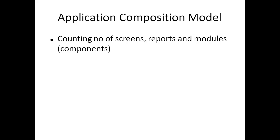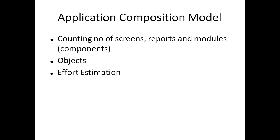The Application Composition Model is based on counting the number of screens, reports, and modules. This estimation is done after the prototype development is complete. We estimate cost by counting the number of screens, reports, and modules — or the number of components. These components — screens, reports, and modules — are all known as objects. This is nothing related to object-oriented programming; Boehm simply called them objects. Effort estimation in this model is done in seven steps.